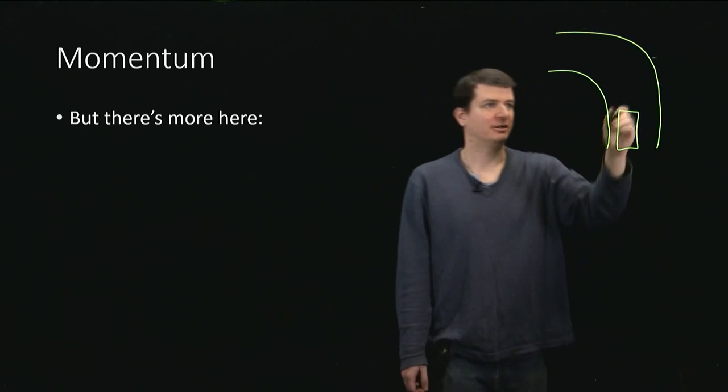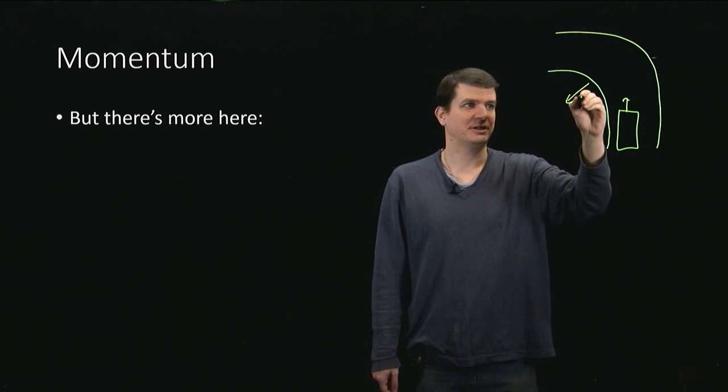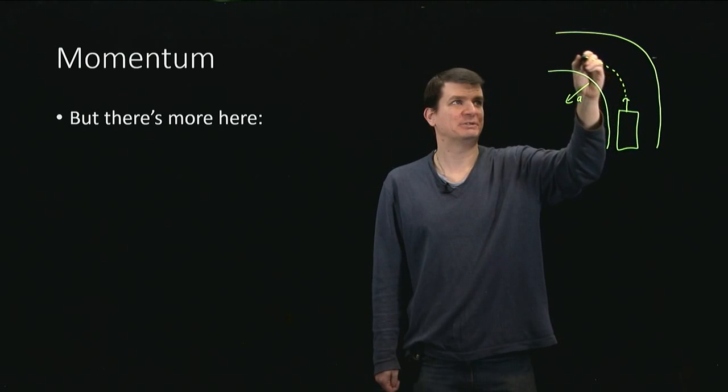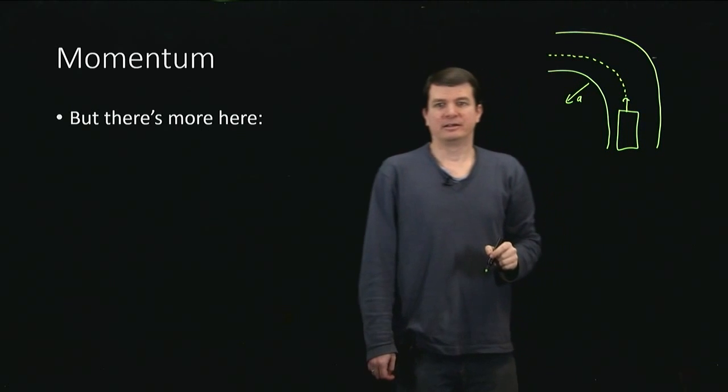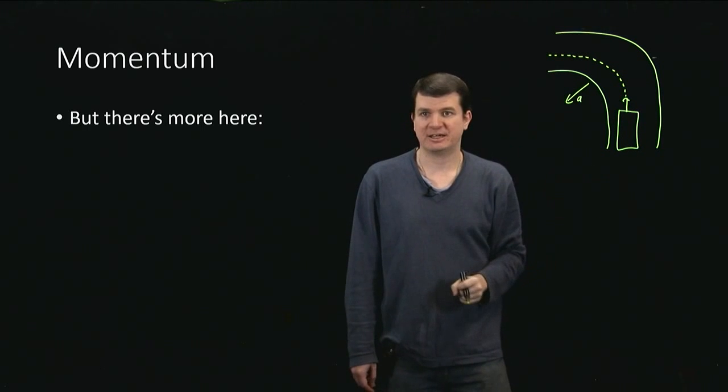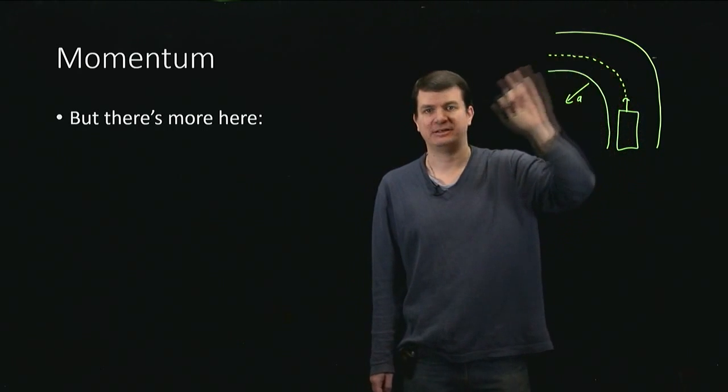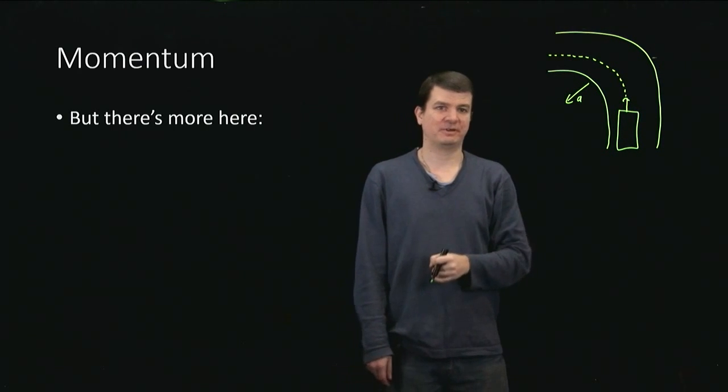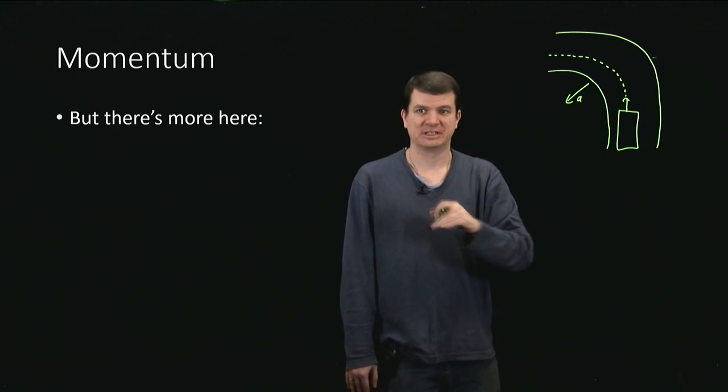So we need our car which has some initial velocity in this direction to experience some acceleration in this direction in order to end up moving along this sort of trajectory. Now we can use kinematics to determine what that acceleration is and then we can use F equals ma to figure out what force we need in order to actually make the car experience that acceleration. And according to our answer so far, that's all we need. We've now got the acceleration, we've figured out the force, done deal.